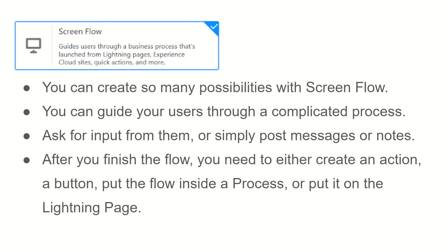After you finish building the flow, you need to either create an action, a button, or put the flow inside a process, or place it on a Lightning page — it might be a record Lightning page. In that way your screen flow will work: it will get inputs from the user and behave according to the logic written in that flow.